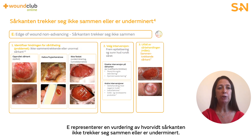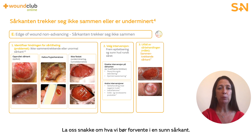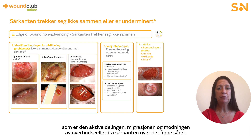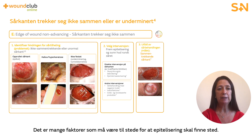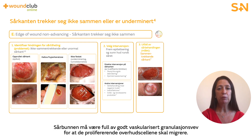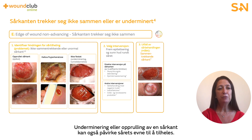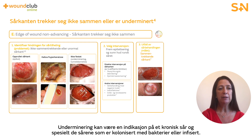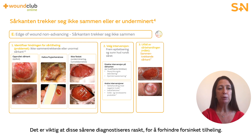E represents edge of wound, non-advancing or undermined. In a healthy wound edge, the final stage of wound healing is epithelialisation, which is the active division, migration and maturation of epidermal cells from the wound margin across the open wound. The wound bed must be full of well vascularised granulation tissue in order for the proliferating epidermal cells to migrate. Undermining or rolling of a wound edge can also influence the ability of the wound to heal, and can be indicative of a chronic wound, in particular those colonised with bacteria or infected.